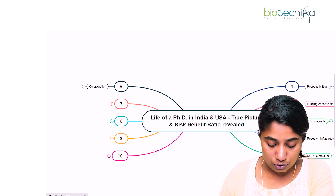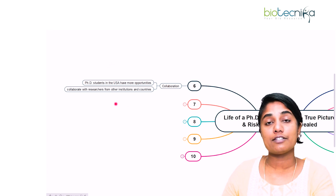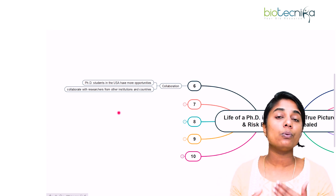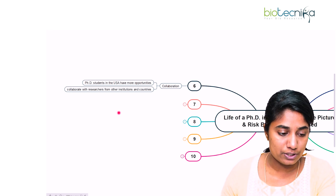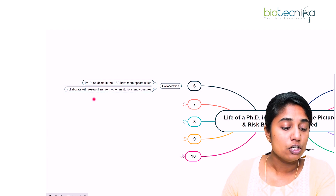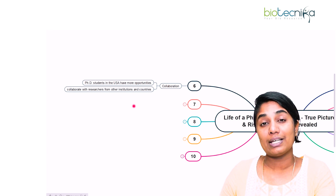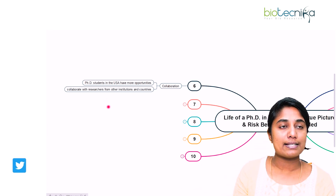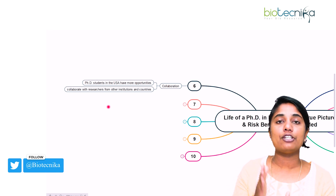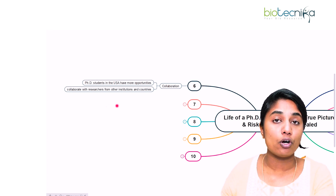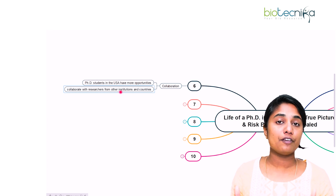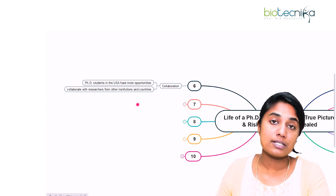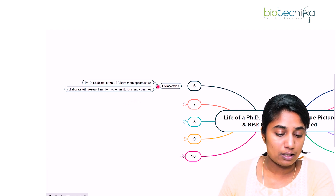Moving on to the sixth point, which is collaboration. PhD students in USA have more opportunities to collaborate with researchers from other institutions as well as countries. In USA, everybody is open to collaboration, whereas in India it's quite restricted — only a handful of people try to collaborate with other interdisciplinary fields. This gives more diversification to your research and more doors open for your job as well as research career. So for collaboration, USA is better compared to India.